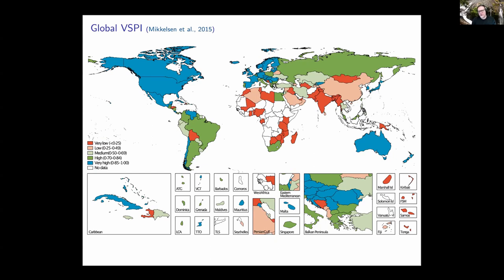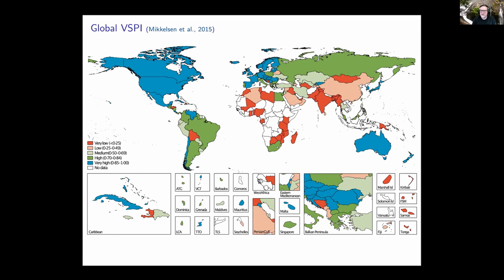That global picture very quickly focuses us on Africa, parts of Asia, and a little of Latin America, indicating that very much improvement can be done to produce the foundational information we need to understand mortality. What I want to do in the rest of this talk is be relatively optimistic and bold in what I think are ways we should collectively — as individuals and institutions interested in population studies and global health — move forward to address this big problem.